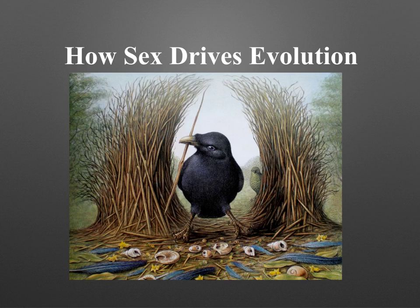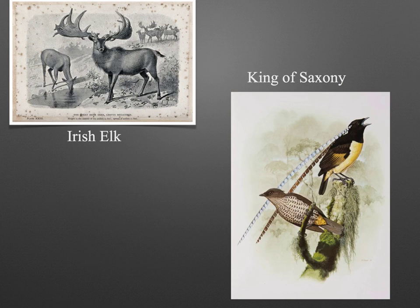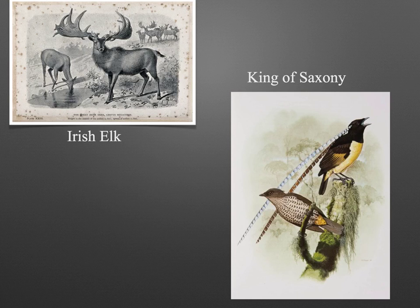In this video we are going to focus on the contribution of sex towards evolution. In this picture you can see the Irish elk and the King of Saxony. On the left side you can see the female elk and on the right side the male elk. The Irish elk is an extinct species, and the main cause for the extinction is focused on the antler size. Compared to their overall body size, their antlers are really large, which restricted their daily activities like finding food or walking through the jungle.